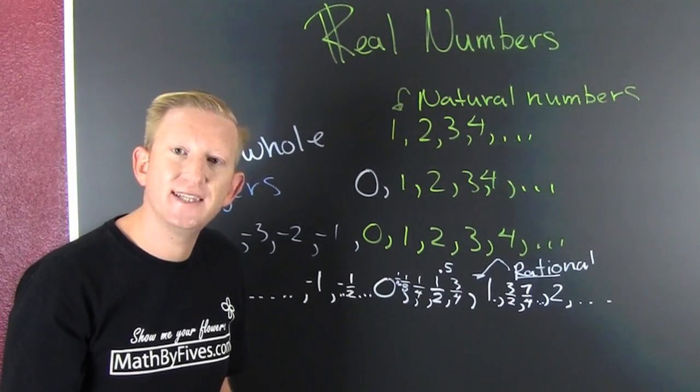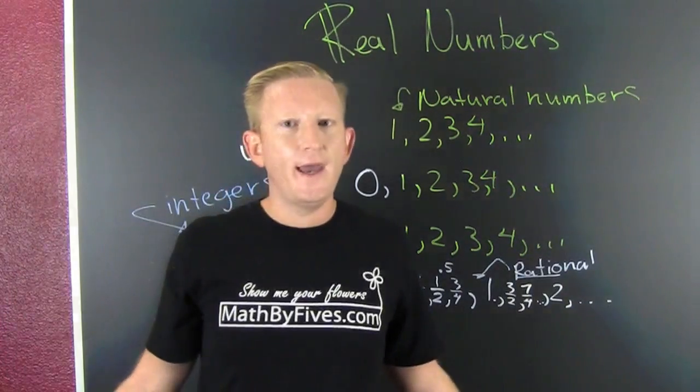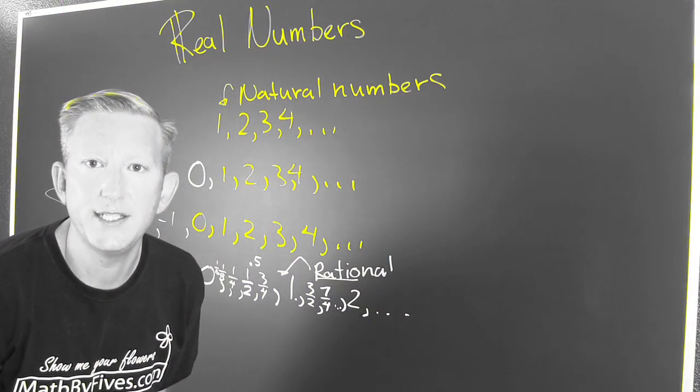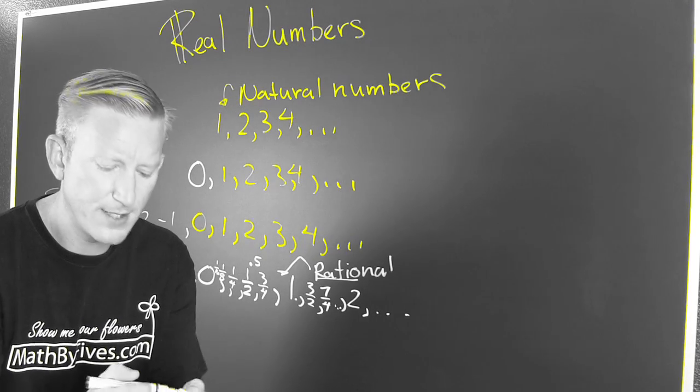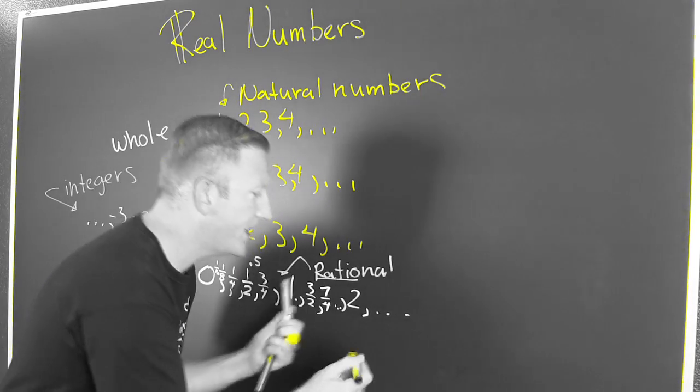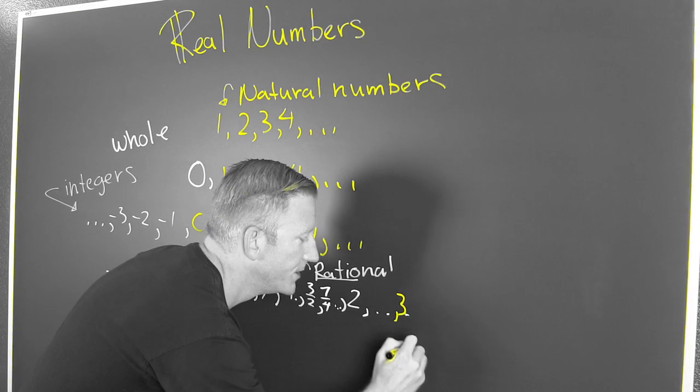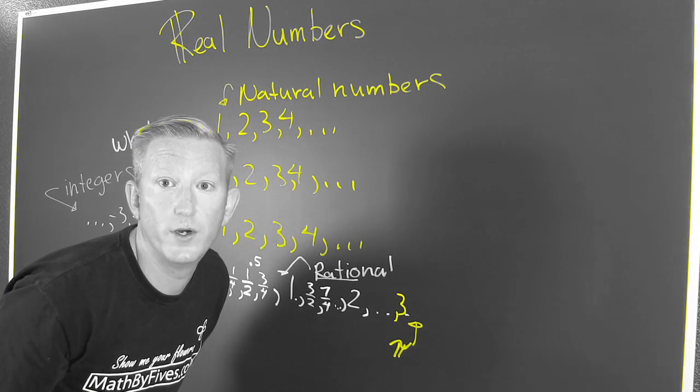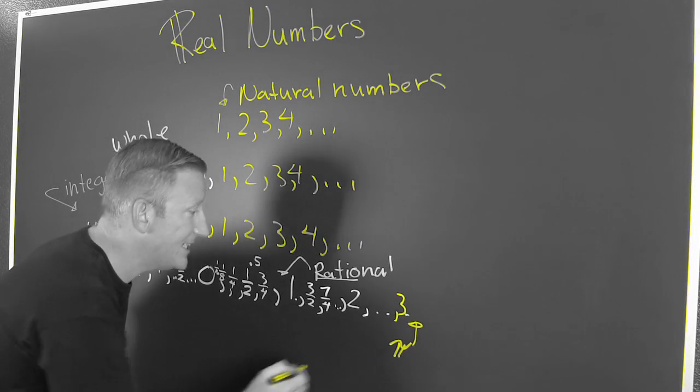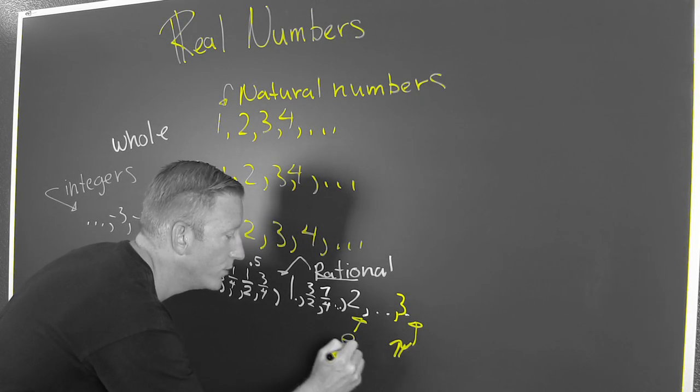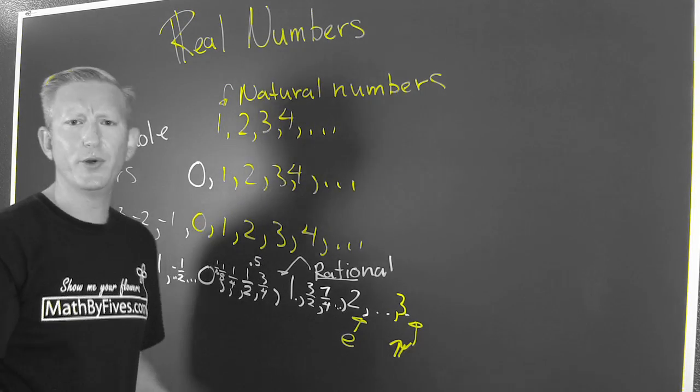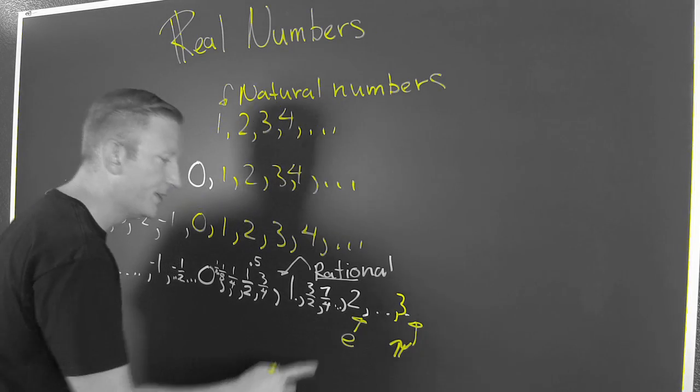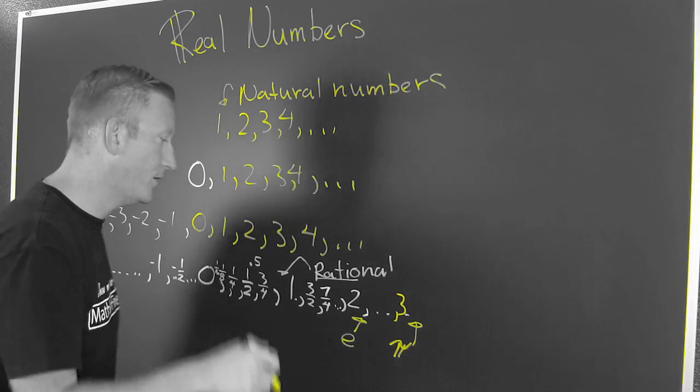But are those the only numbers in the entire world? No, man. I'm talking about the non-repeating, non-terminating decimals, the ones that don't make any sense. Like pi - this pi, it's over here, it's after three. Pi is in there, which is like three point one four. What else is in there? E is in there, which is two point some some some. Yeah, these are the numbers that don't make sense. What else is in there?